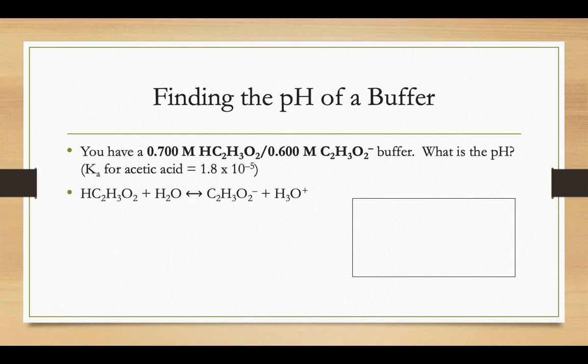If you wanted to know what that pH of that buffer is that you just made, and you knew what the Ka value for acetic acid is, you could use the Ka equation, the dissociation of acetic acid and water, and set up an ICE table. You know what the molarities of the acetic acid and the acetate ions are. Since you know what Ka is, you can have the acetic acid come down by some amount x, the acetate ion and the hydronium ion come up by some amount x.